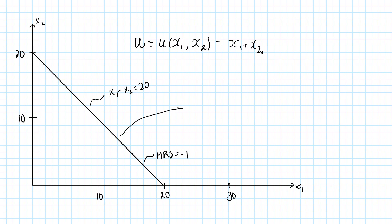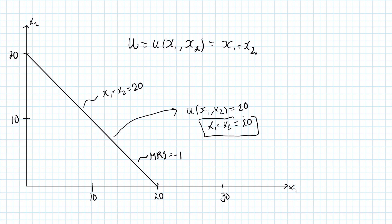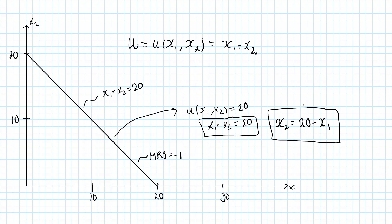This particular indifference curve is associated with a utility of 20. So u(x1, x2) = 20, or equivalently x1 plus x2 equals 20. This is an implicit relationship between x1 and x2. I can make it explicit by moving x1 to the other side, giving x2 equals 20 minus x1. This is the equation of the straight line, with intercept 20 and slope minus 1, which is what we need for an indifference curve representing perfect substitutes.